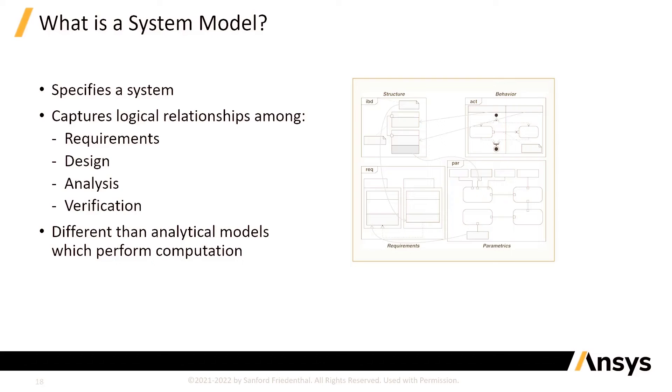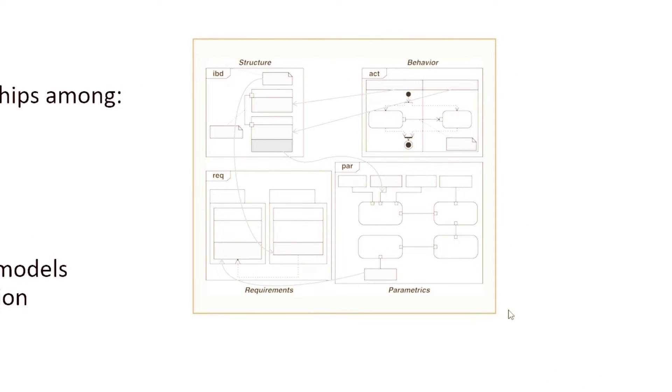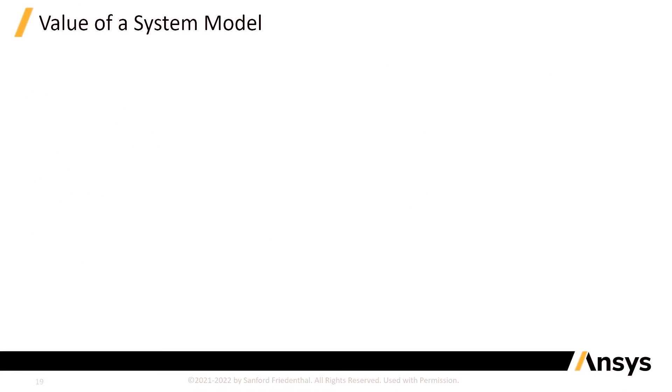And it's different than an analytical model, which performs computation. The icon you see on the right-hand side here is a SysML icon, and it represents the four pillars of SysML, which are structure, behavior, requirements, and parametrics, and all of the relationships within them and between them. And as you learn SysML, you get an understanding of what all those relationships are. So, that's what a system model is.